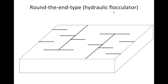In the round-the-end-type hydraulic flocculator, we have wooden board structures or parts that are being pointed out to you right now, and these parts are called baffles.